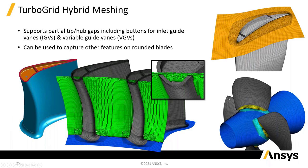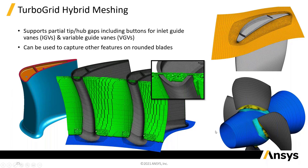You can then build unstructured mesh in that region — you don't have to take it all the way out either; it's a finite region. That could be on the hub or on the tip out on the shroud. It builds a really nice quality mesh, and this has really, really extended the use of TurboGrid.